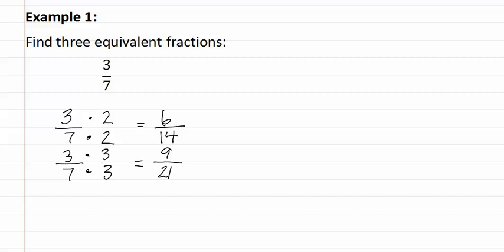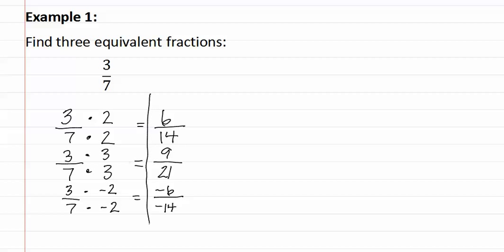This not only works with positive numbers, but it also works with negative numbers. If we have three-sevenths and we multiply it by negative two, we would get negative six divided by negative fourteen. This is also an equivalent fraction. As you can see, I have listed three equivalent fractions that are all equal to the same value as three-sevenths.